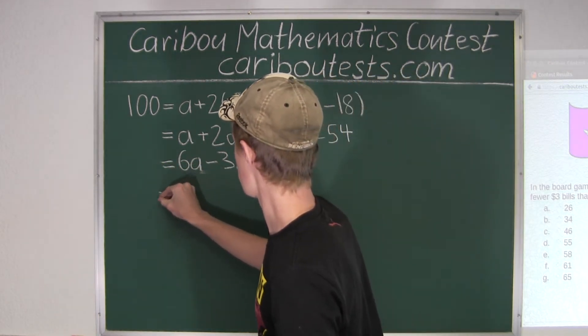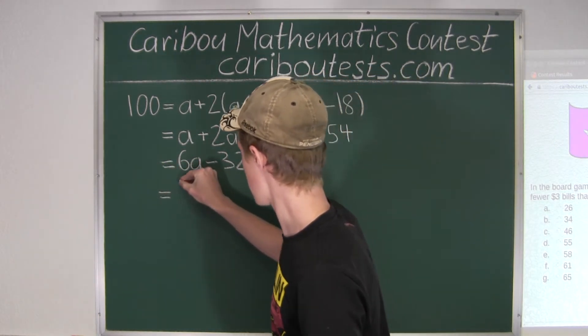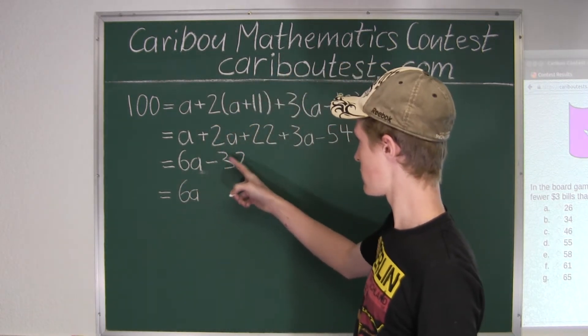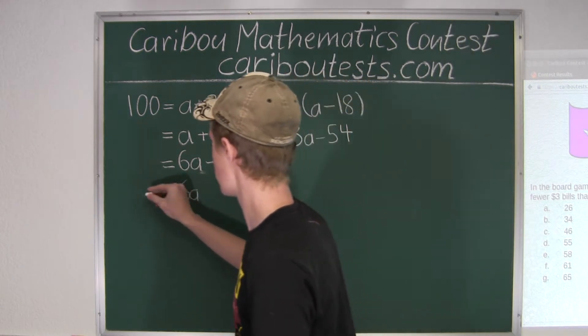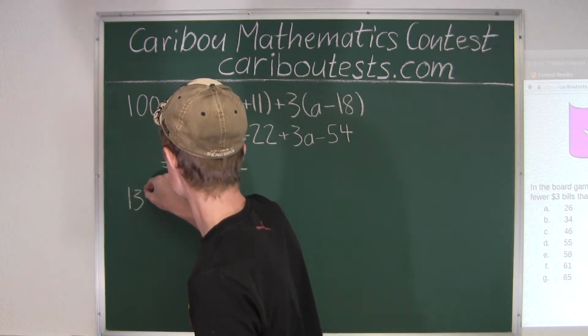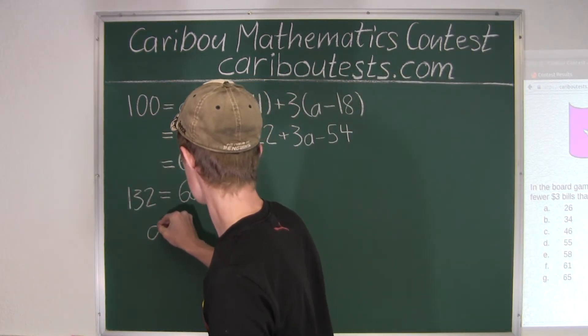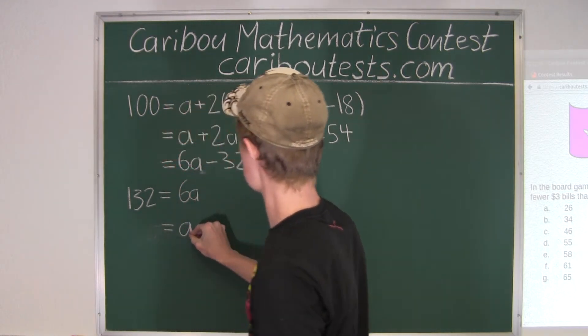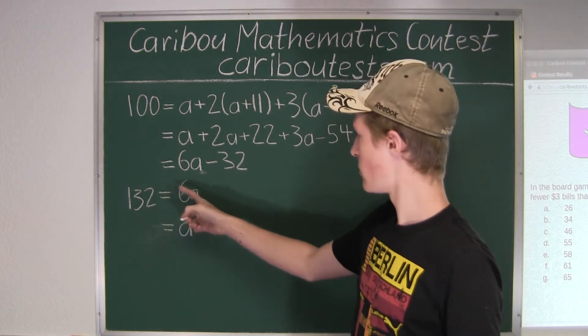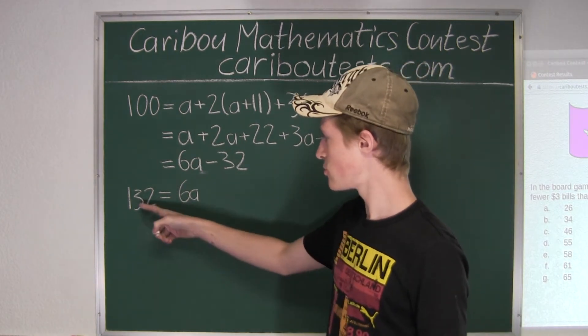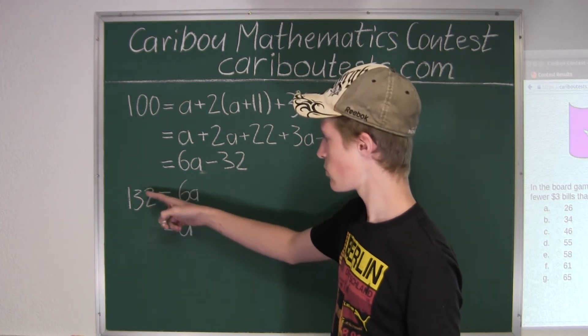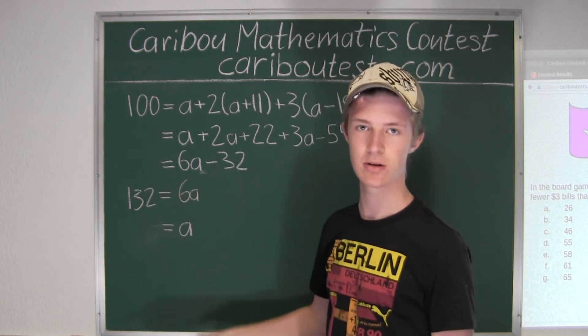So finally we have 6A equals, bringing negative 32 to this side, 132. So finally, A equals, dividing by 6 on both sides, 120 divided by 6 is 20, and 12 divided by 6 is 2, so 22.